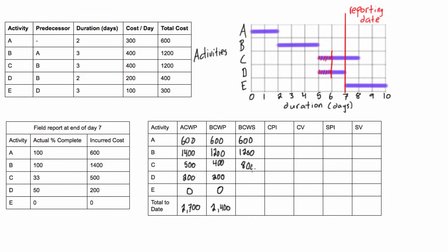Activity D was expected to be completely done by end of day seven. At $200 per day for two days, the total budgeted cost is $400, so BCWS for activity D is $400. Activity E has zero scheduled spend. Adding all of these together, the total budgeted cost of work scheduled is $3,000 — meaning if the plan had gone according to schedule, we would have spent $3,000 by end of day seven.